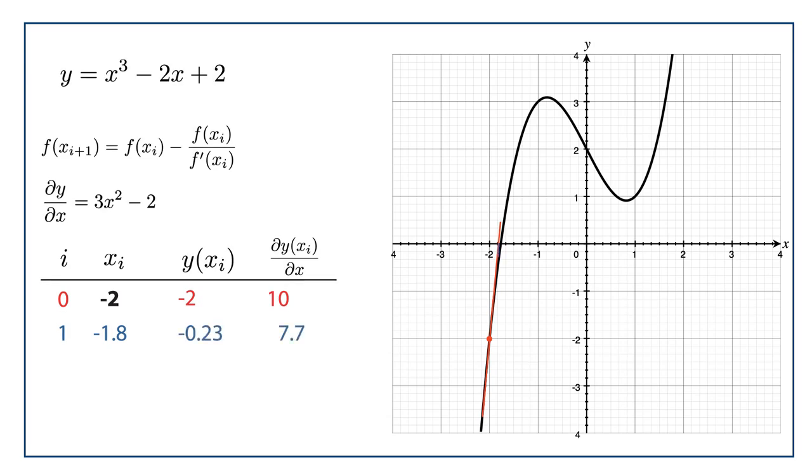Then we can evaluate the result for that guess and find that it's just a little less than 0, minus 0.23, and the gradient is 7.7. So we've gone from being out by 2 on y to being out by just 0.23. So in some sense, we've got like 10 times better in our estimate, just in our first go.